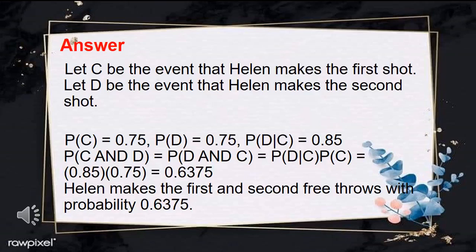Here is the answer for example number one. Let C be the event that Helen makes the first shot, and D be the event that she makes the second shot. P of C equals 0.75, P of D equals 0.75, and P of D given C equals 0.85. Therefore, P of C and D equals P of D given C times P of C equals 0.85 times 0.75 equals 0.6375. Helen makes both free throws with a probability of 0.6375.